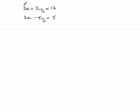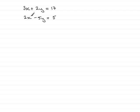In this question, we're asked to solve the simultaneous equations 3x plus 2y equals 17, with 2x minus 5y equals 5. I've picked this example to demonstrate the next type of simultaneous equation where neither the x terms nor the y terms are the same.